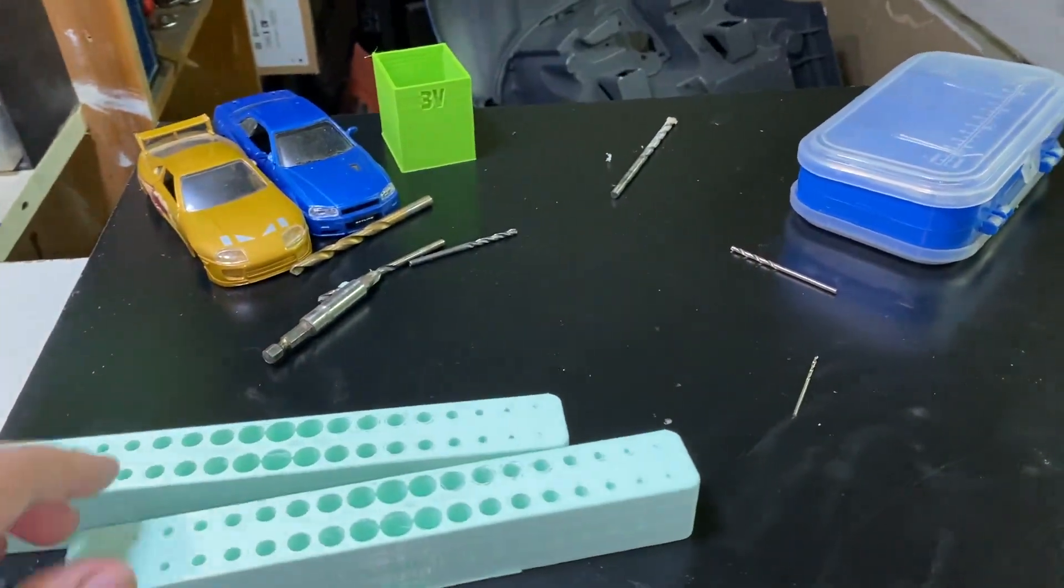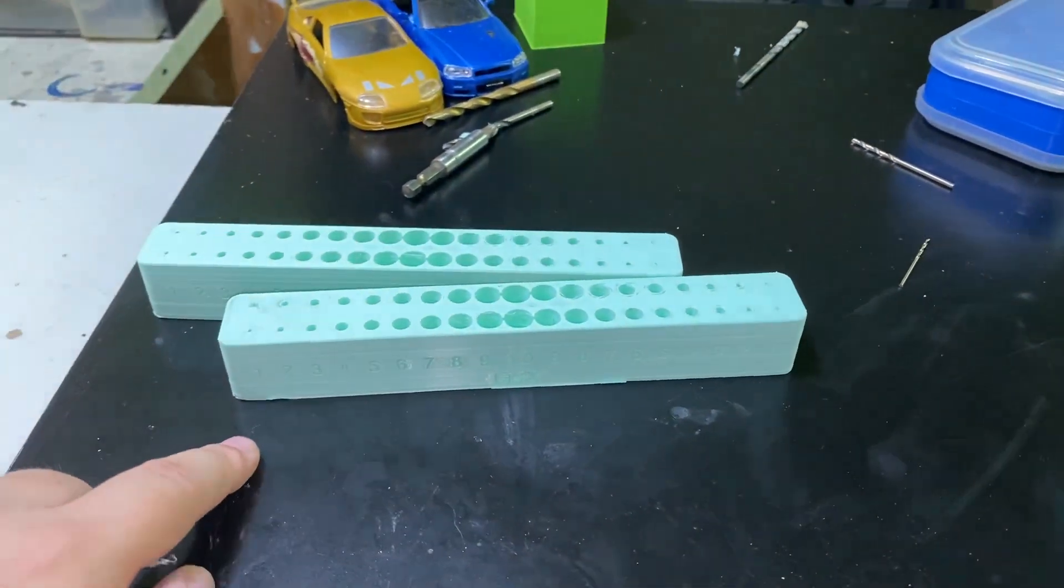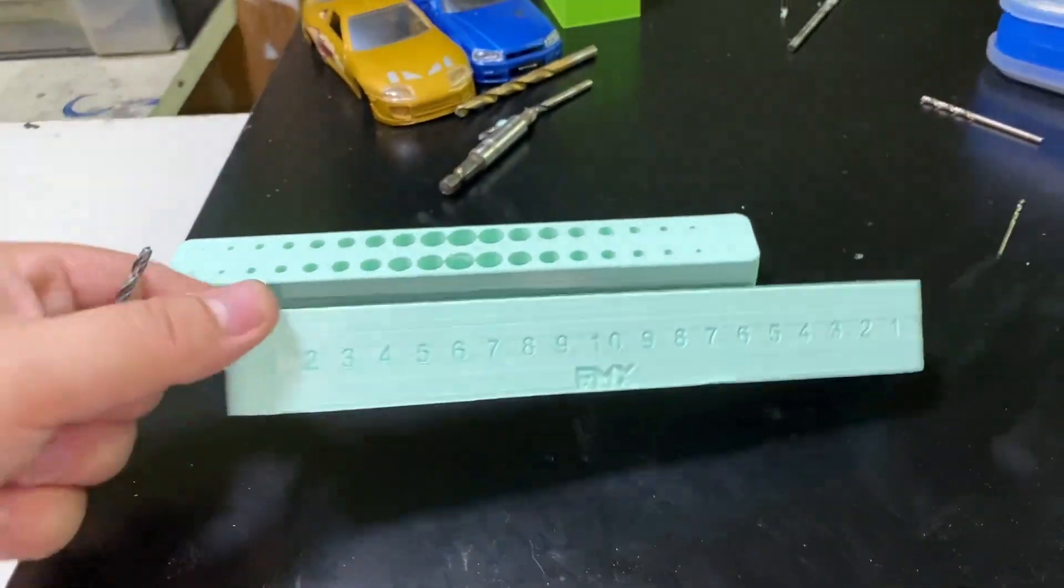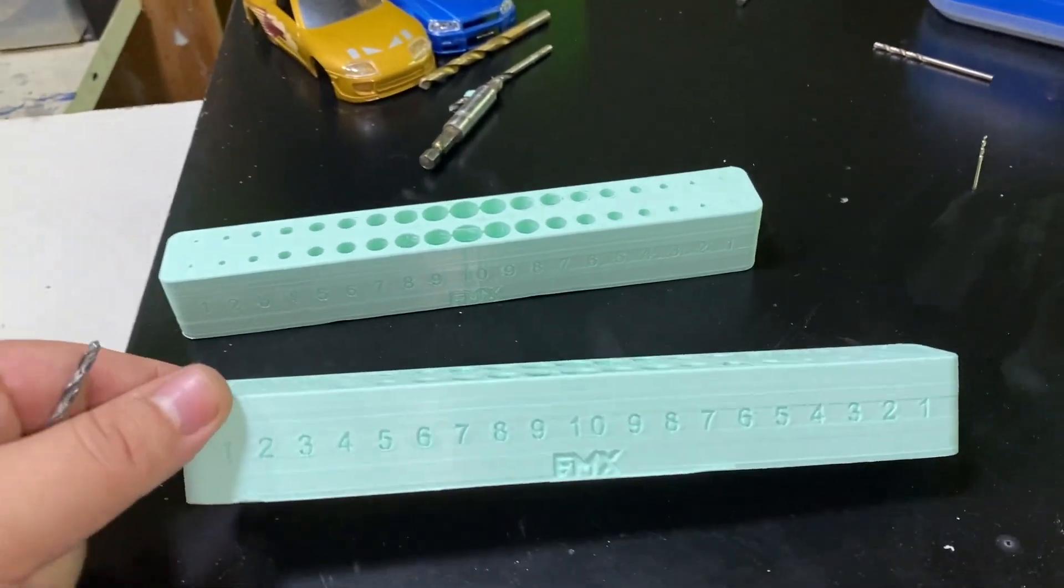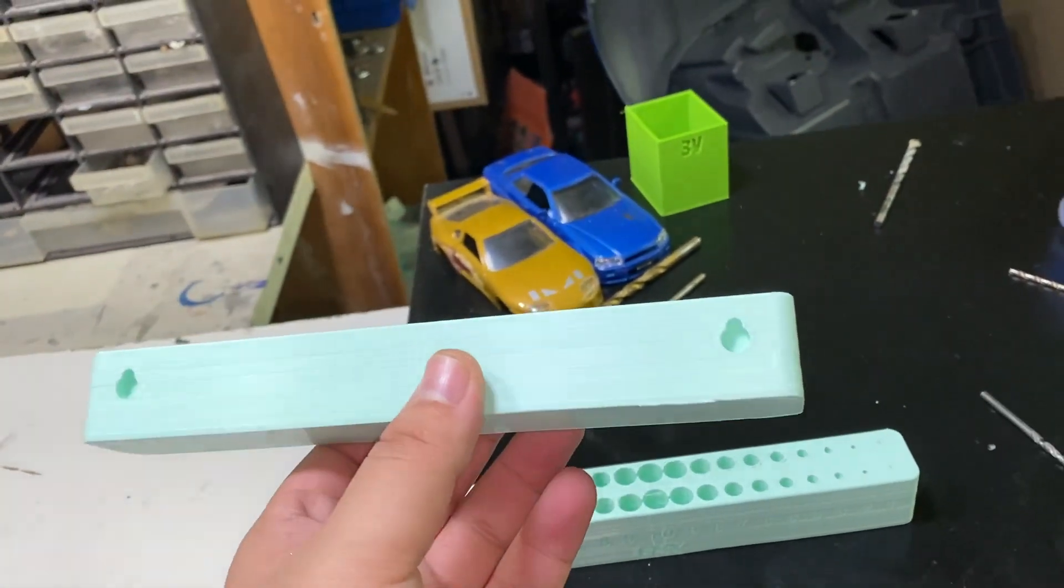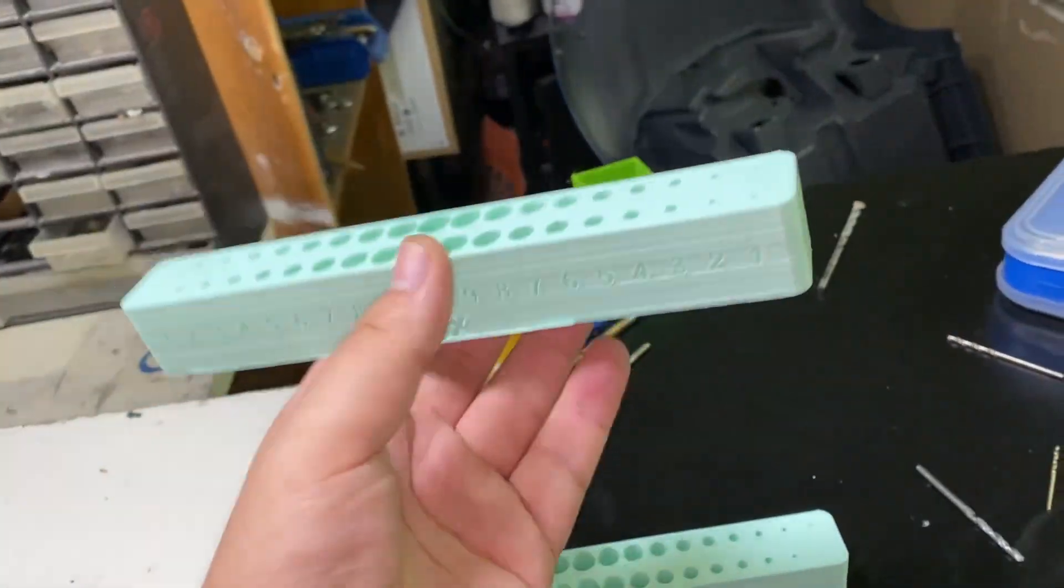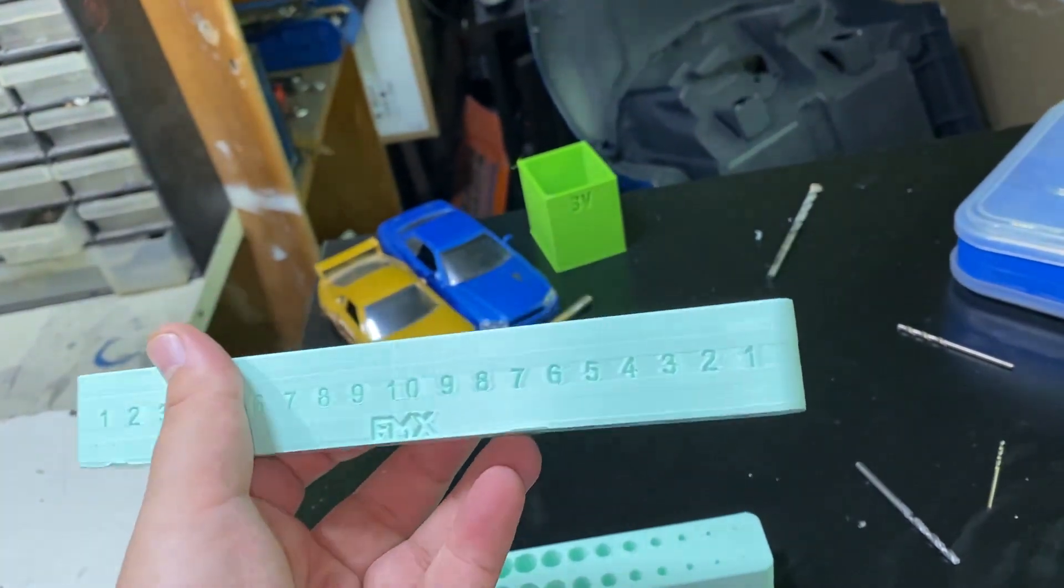This is a drill bit holder. It will fit, you can see the numbers are here, from 1mm to 10mm. It attaches on the wall with two screws. It has the slot that it slips in. It has my logo of course.